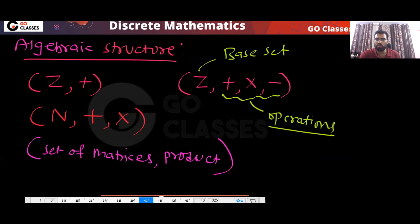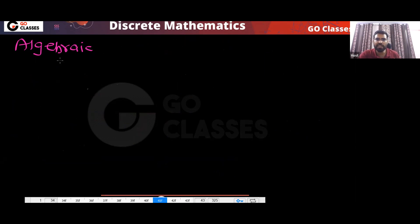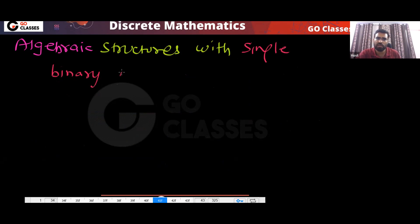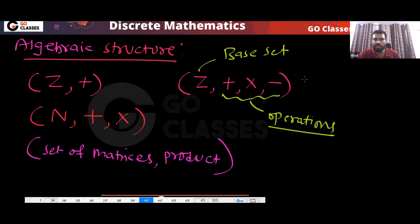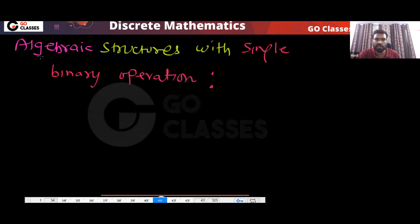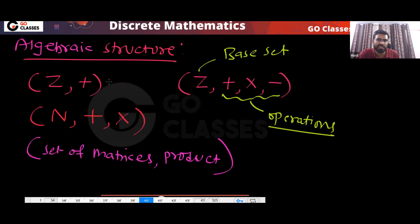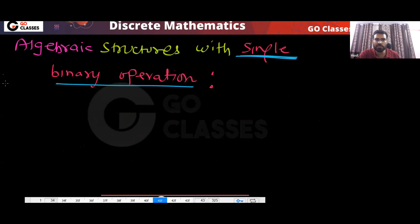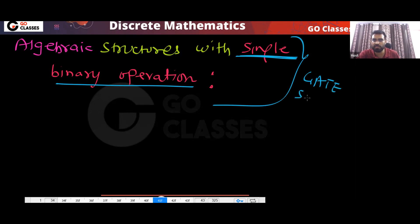In our GATE syllabus, what we have is algebraic structures with a single binary operation. In the GATE syllabus, you have algebraic structures with a single binary operation — this is what we have. For example, the structure of integers with plus has a single binary operation, so it is in the GATE syllabus.